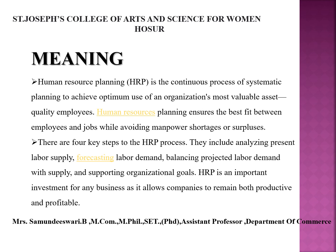Meaning of Human Resource Planning: It is a continuous process of systematic planning to achieve the maximum use of an organization's most valuable asset — quality employees. Human Resource Planning ensures the best fit between employees and jobs while avoiding manpower shortages or surpluses. There are four steps in the Human Resource Planning process.